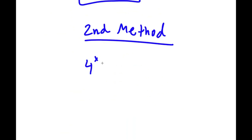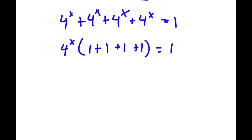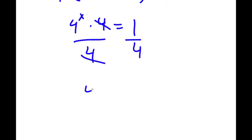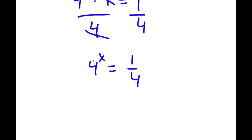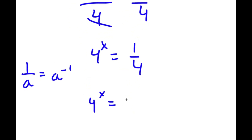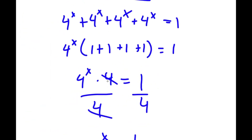Now I have a second method of solving this problem. Again starting with 4 to the power of x plus 4 to the power of x plus 4 to the power of x plus 4 to the power of x equals 1, I factor out 4 to the power of x to get 4 to the power of x times 4 equals 1. This time instead of multiplying, I divide both sides by 4, so 4 to the power of x equals 1 over 4. Since 1 over a equals a to the power of negative 1, then 1 over 4 equals 4 to the power of negative 1. Since these bases are equal, the exponents are equal, so x equals negative 1 again.